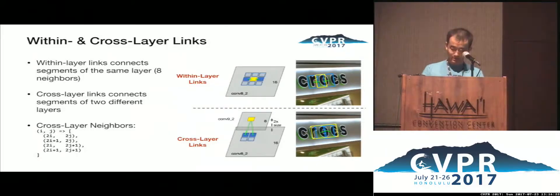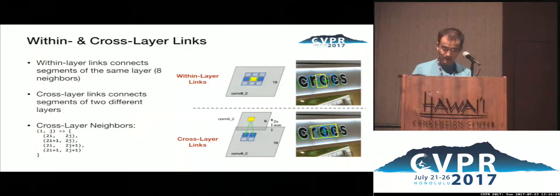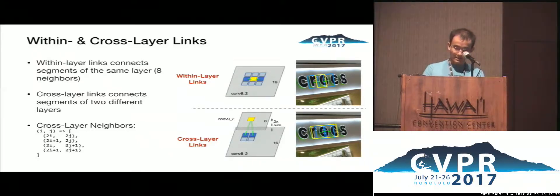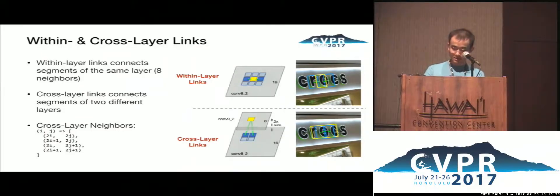But there could be redundant segments detected for the same word at multiple layers. So to address this problem, we propose yet another type of links called cross-layer links. They connect nearby segments of the lower layer. Thereafter, segments of different layers can also be connected and combined.